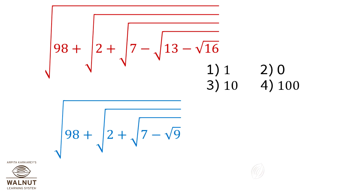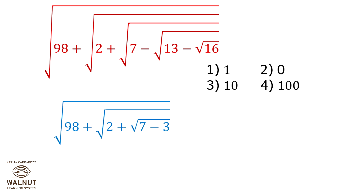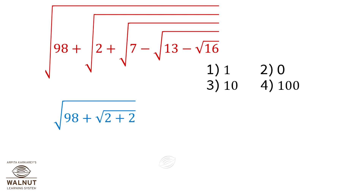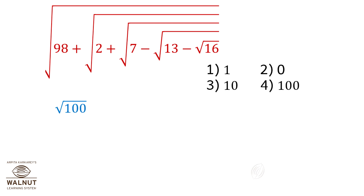This equals under root 98 plus under root 2 plus under root 7 minus 3, which equals under root 98 plus under root 2 plus 2, which equals under root 98 plus 2, equals under root 100, equals 10.